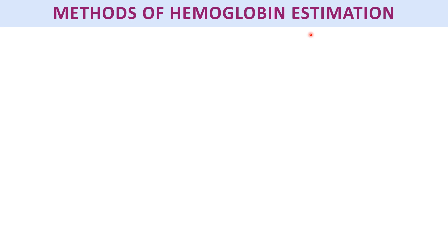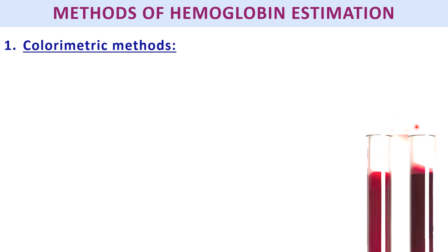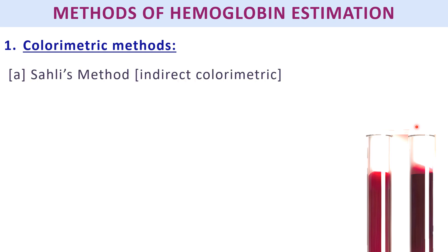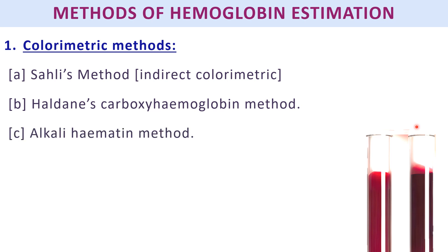The next question: what are the different methods of hemoglobin estimation? One major method is the colorimetric method, where we compare color. The different colorimetric methods are Sahli's method, which is an indirect colorimetric method, Haldane's carboxy hemoglobin method, and the alkali hematin method. Note: it is colorimetric (comparing colors), not calorimetric.